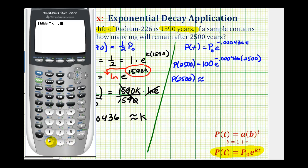And then we have -0.000436 times 2,500. Notice how the value is still approximately 33.6 milligrams.